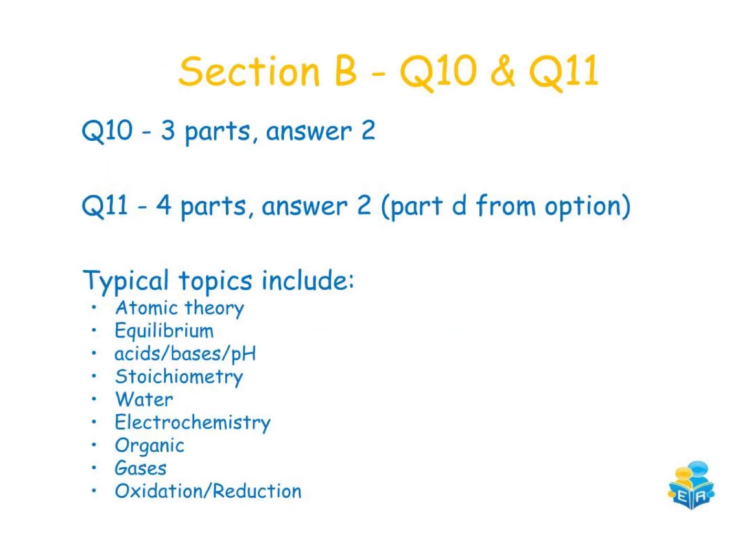Questions 10 and 11 in section B have some choice involved. In question 10 there will be three parts and you have to answer two. In question 11 there will be four parts and you have to answer two, and that fourth part — part D — will be from the option on the course.